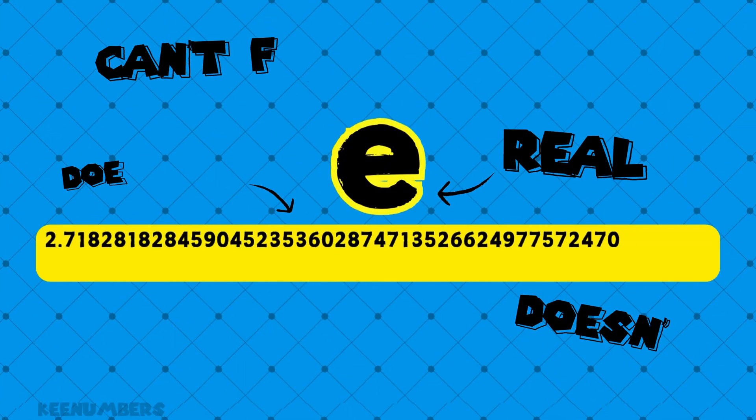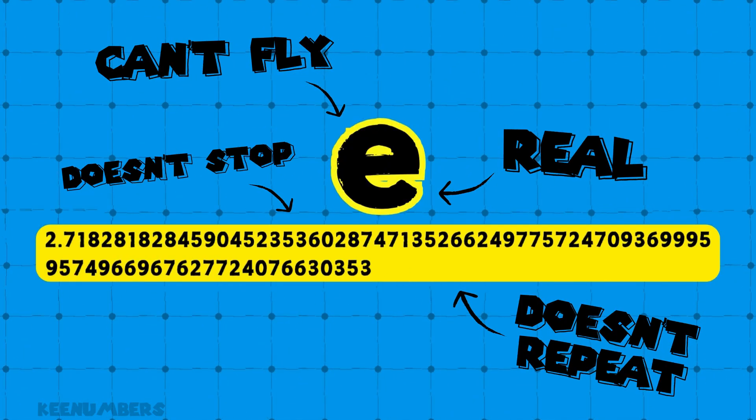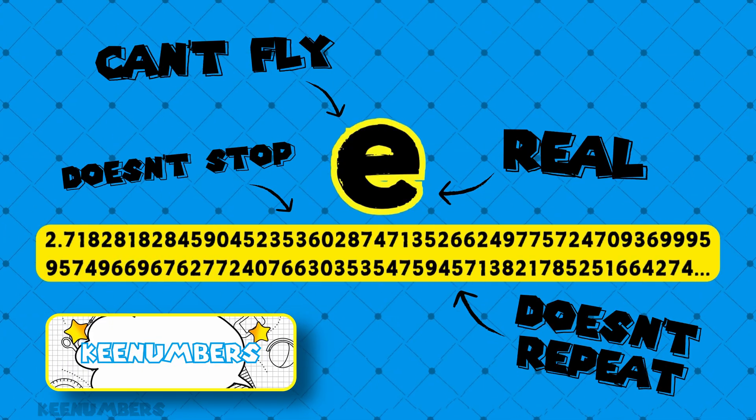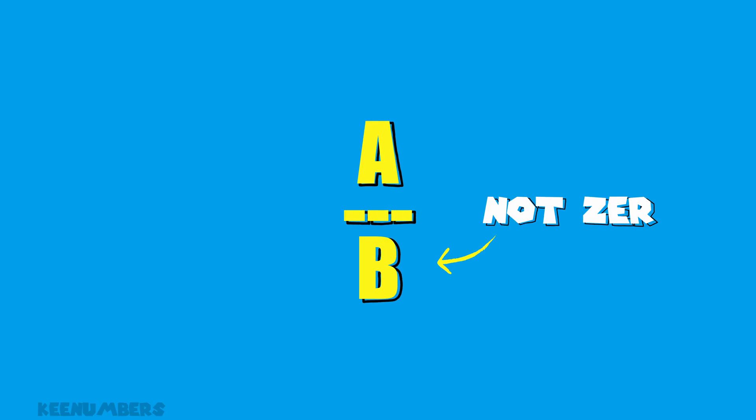An irrational number is a real number — sorry, imaginary numbers, you're being evicted. You cannot be written as a fraction of two integers.